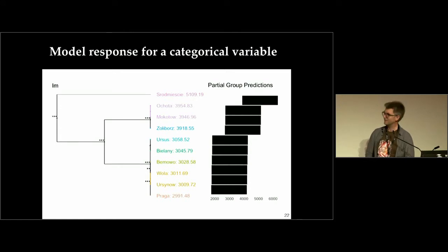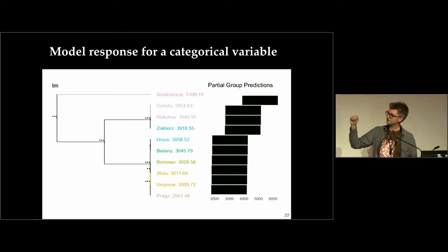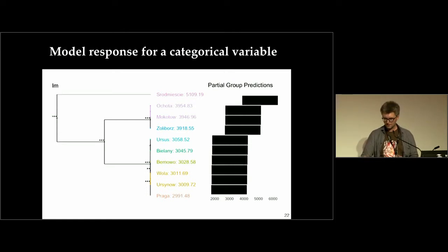You can do similar things for categorical variables — here for a categorical variable like district, we have about ten districts, and you can use the black box to understand which districts are closer to each other. A dendrogram shows which levels are more or less similar to each other based on the black box model predictions.